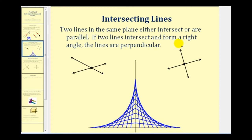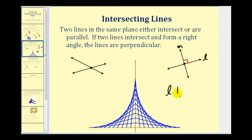If two lines intersect and form a right angle, which is a ninety degree angle, as we see in this example, the lines are called perpendicular. To show that the lines intersect at a right angle, we often put a little square at the intersection. So if this is line L and this is line M, we can state that line L is perpendicular to line M.